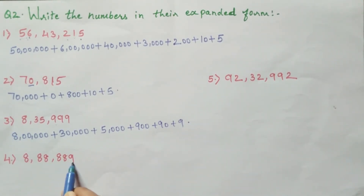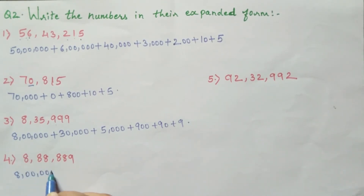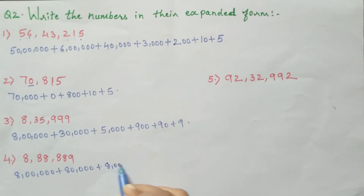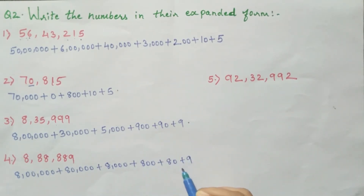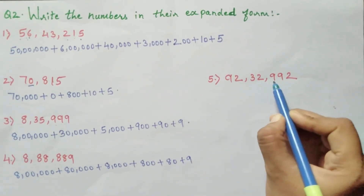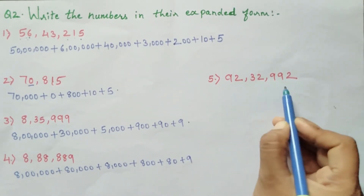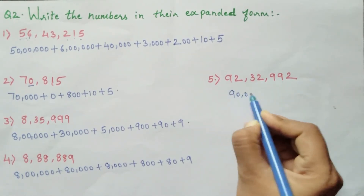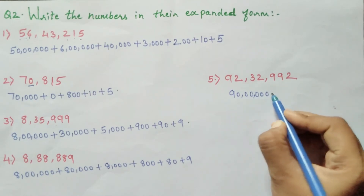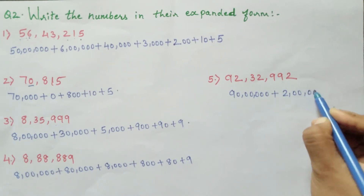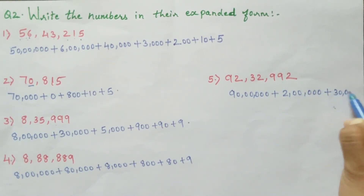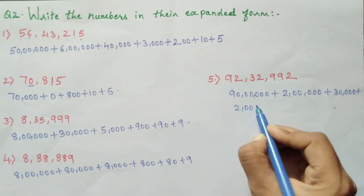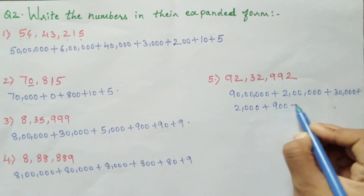4th one: 8,88,889. To write the expanded form, we write 8,00,000 + 80,000 + 8,000 + 800 + 80 + 9. Number 5: 92,32,992. To write the expanded form, we write 90,00,000 + 2,00,000 + 30,000 + 2,000 + 900 + 90 + 2.